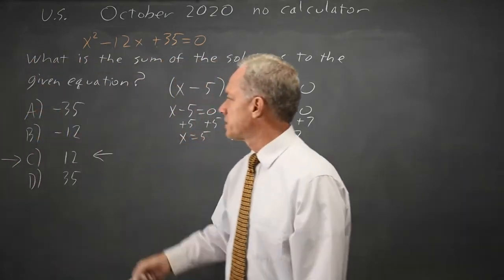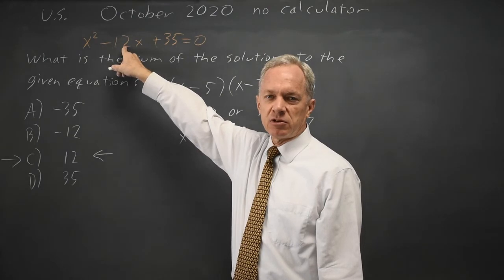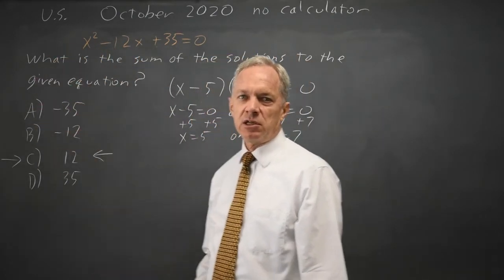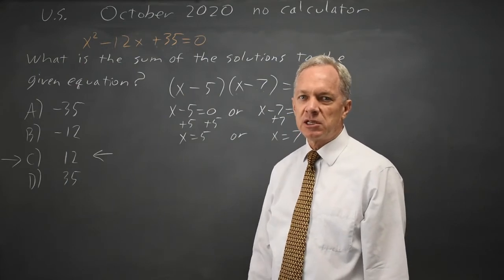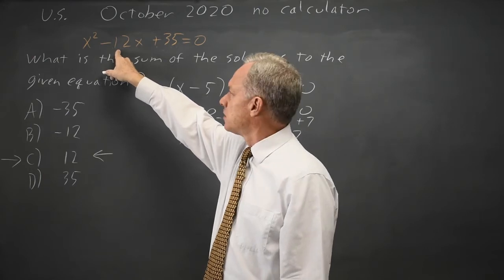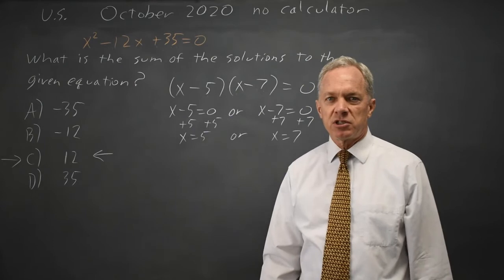It is not a coincidence that this is the negative of the x coefficient in a quadratic with a leading coefficient of 1. If your leading coefficient is 1, the linear term coefficient is minus the sum of the solutions, and the constant term is the product of the two solutions.